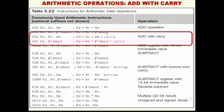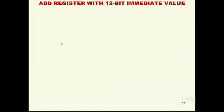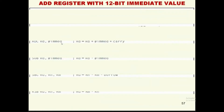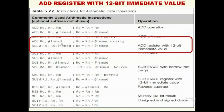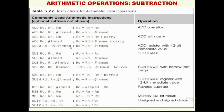ADC is the add with carry operation. The destination register RD = RN + RM + carry value. For the instruction ADC RD, #immediate, RD = RD + immediate + carry. ADDW adds a register with a 12-bit immediate value — when using the W suffix with an immediate constant, it is adding only a 12-bit value, so RD = RD + immediate + carry.